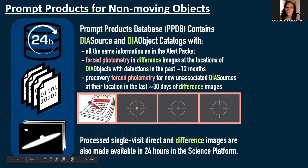Alert packets are the prompt data product released to brokers within 60 seconds of image readout. However, there are additional prompt data products that will be released by the Rubin Science Platform within 24 hours. The Prompt Products Database, the PPDB, contains the full DIA source and DIA object catalogs, which have all the same information as in the alert packets with a few additions. Namely, the DIA object catalog will include difference image forced photometry at the locations of all DIA objects with detections in the past 12 months.